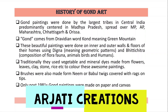For brushes, they would use neem or babul twigs, and on top of the twigs they would tie rags or pieces of cloth to make the tips of their brushes. It was only post-1981 that Gond Art was made on paper or on canvas.